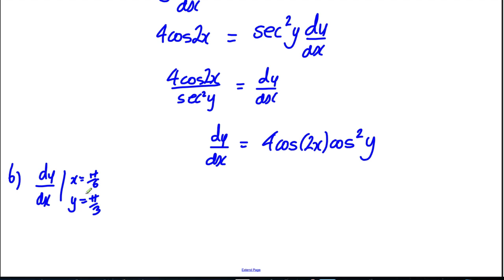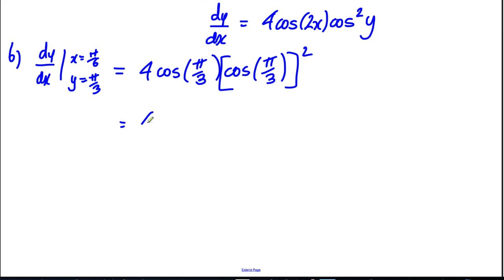Okay so that's going to be equal to 4 cos of 2x, with 2 π/6 is clearly π/3, and cos of π/3 all squared. So that's going to be equal to 4 cos of π/3 is a half, so 4 times a half, and cos of π/3 squared is a half squared.